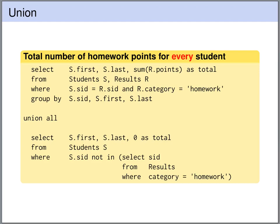We want to compute the total number of homework points for every student, and the emphasis is on every. We have seen the upper half of this query before — it gives us the total number of homework points for all the students that have submitted at least one homework assignment. But it leaves out all those students that have not submitted any homework assignment. Let's have a look at this query in the online system.